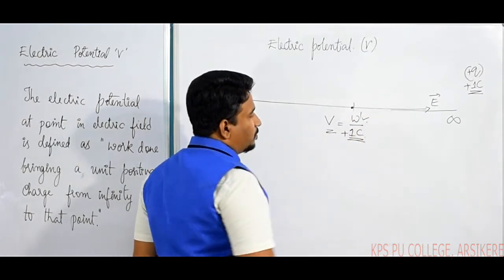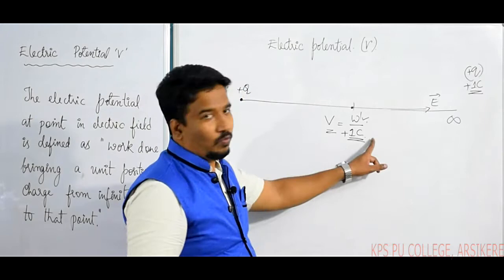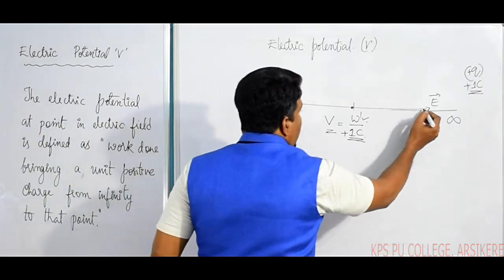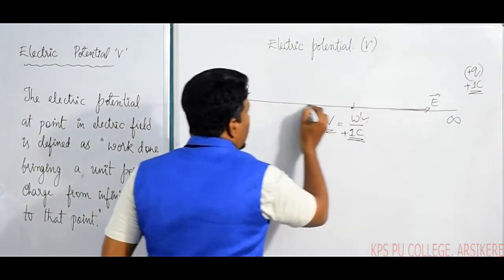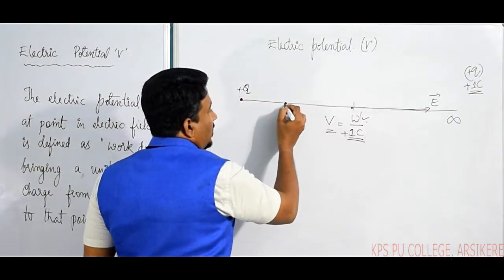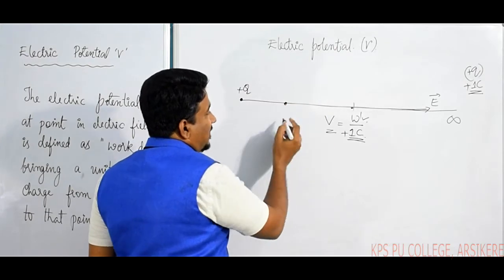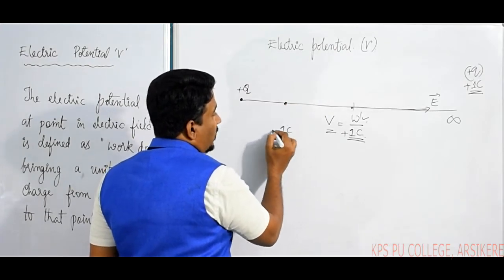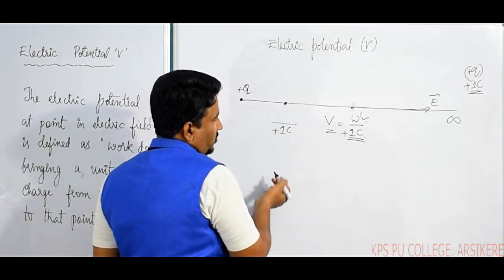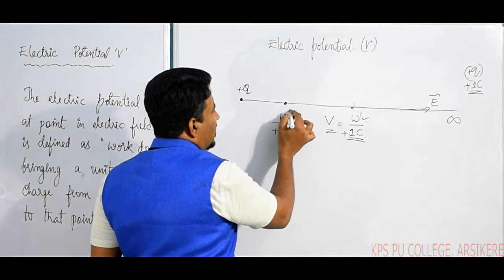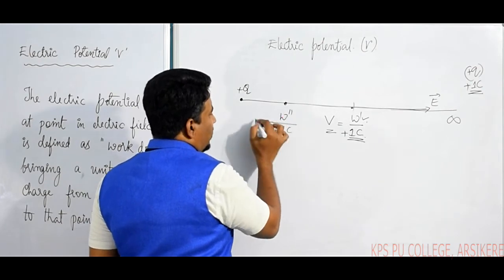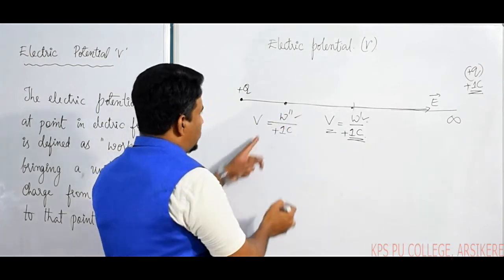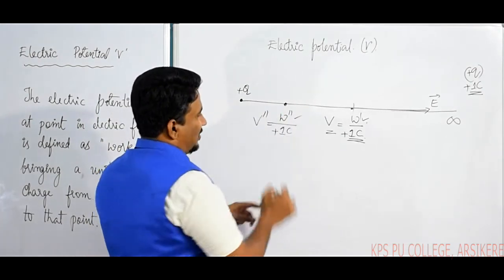The potential at a point is W divided by one coulomb. As the work done changes from point to point, the potential also changes. So at each different location, the work done is different, and therefore the potential is different.